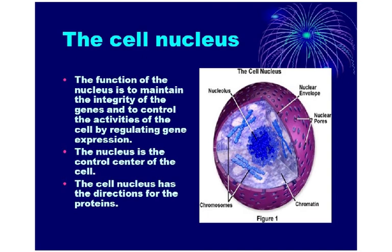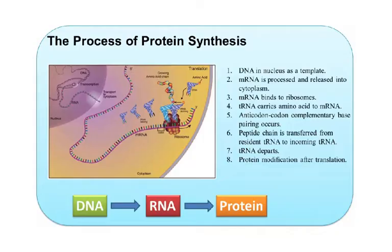The function of the nucleus is to maintain the integrity of the genes and to control the activity of the cell by regulating gene expression. For example, we have the gene for insulin, but insulin is only made in the pancreas — that's called gene expression. The nucleus is the control center with the directions — the recipe — to make proteins. I'm giving a little more detail than what's needed at O-Level, but I feel I must explain this.